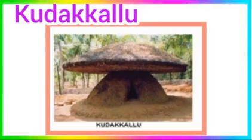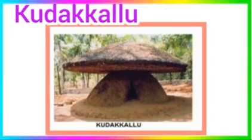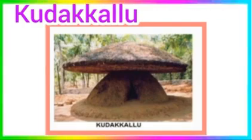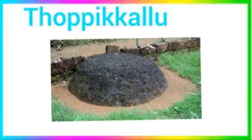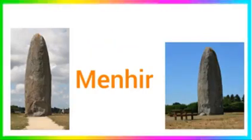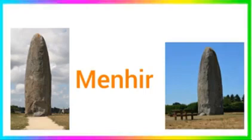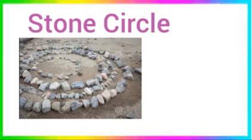In kudakalla, the corpse is buried and curvilinear blocks are installed on the ground with a hollow space in between, and an umbrella-shaped block is kept atop. In the case of topikalla, the umbrella-shaped rock is placed on the ground. Menhir is a large man-made standing stone. The stone circle is a circular alignment of stones.